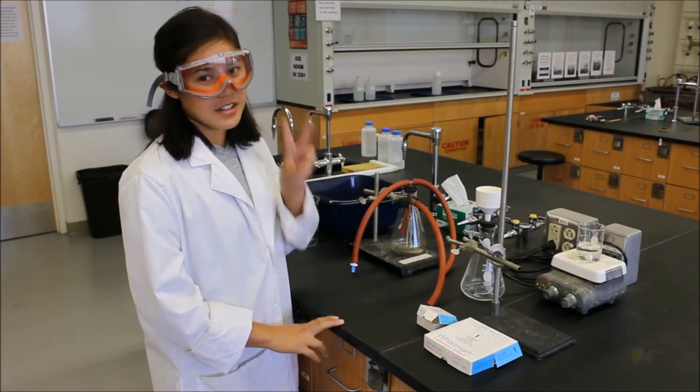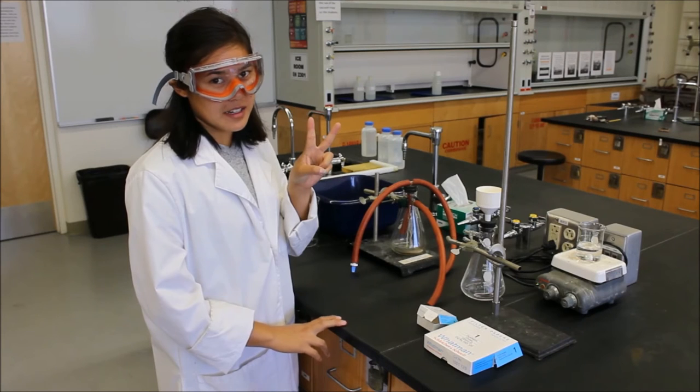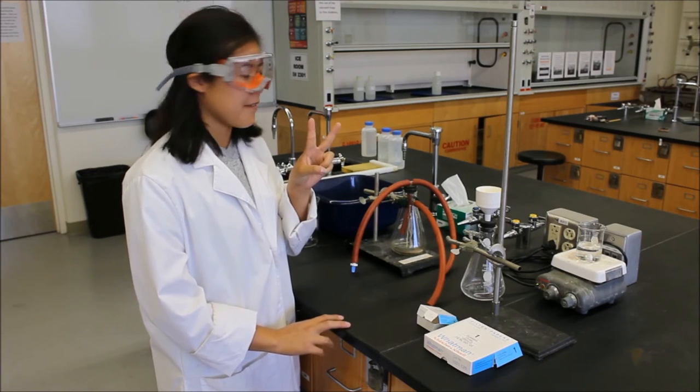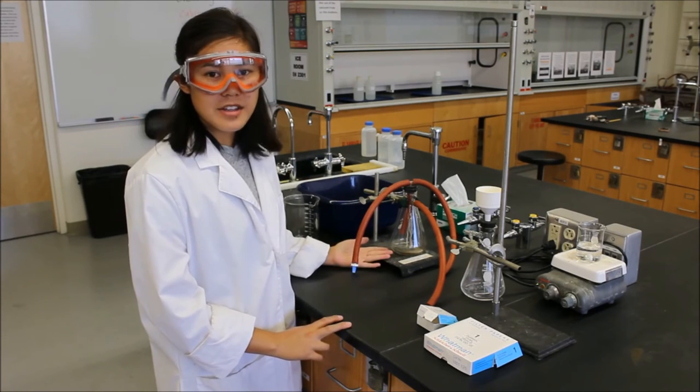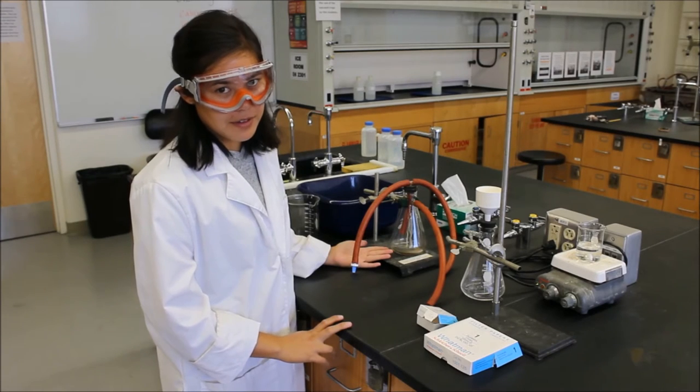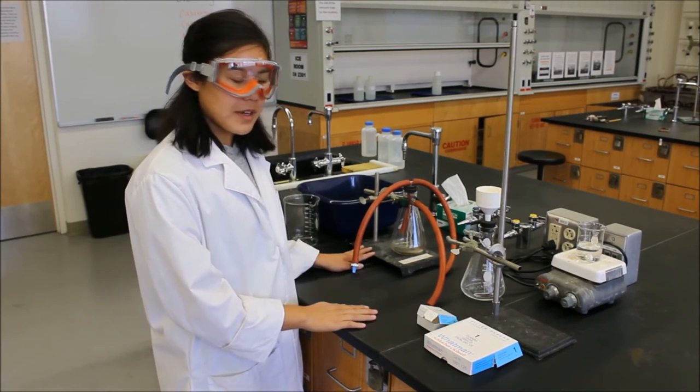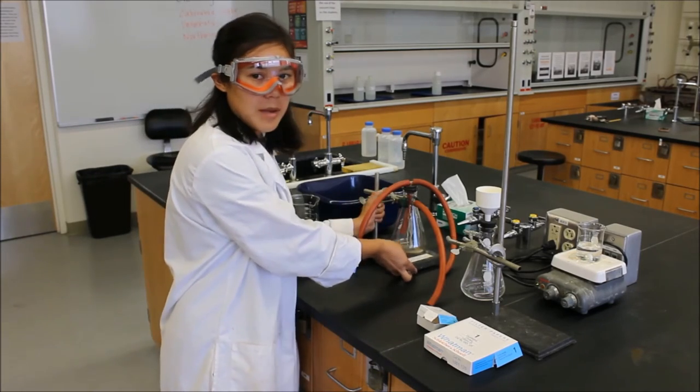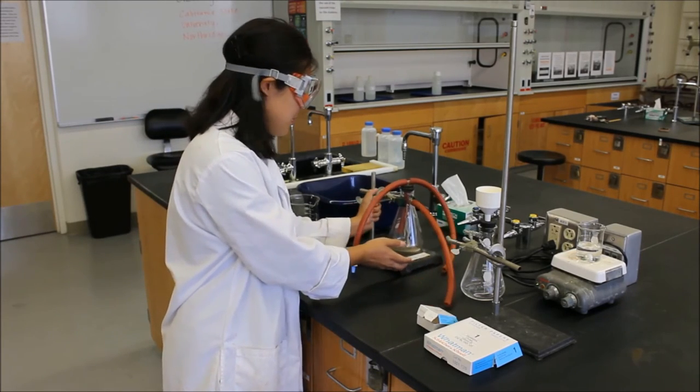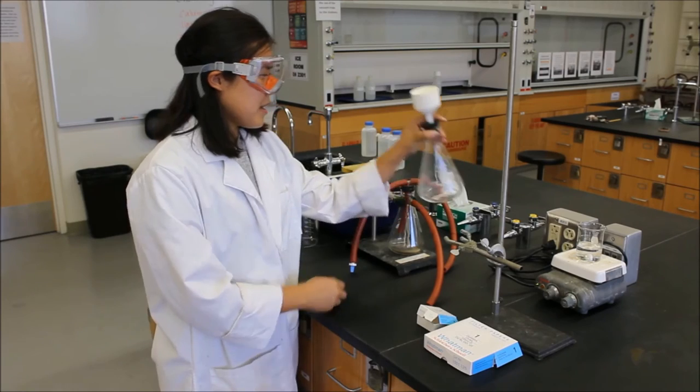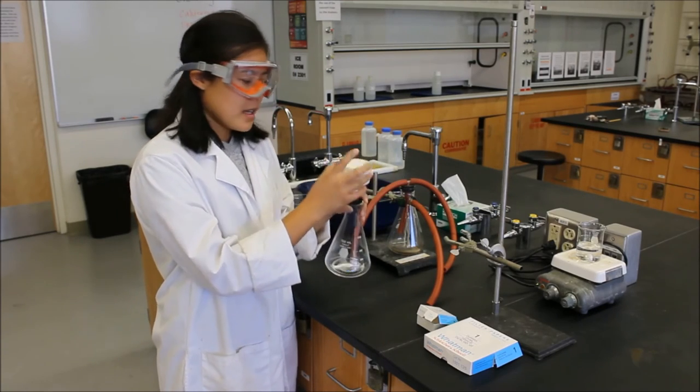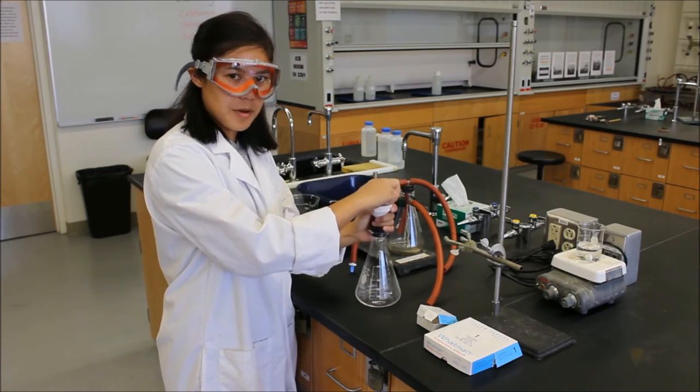So because this is a two-day experiment, we're going to need to be able to set up a filter vacuum trap so that we can filter out our crystals after we've let them sit and let them grow. So what we do is we need a vacuum trap here and we need a Buchner funnel. Now inside the Buchner funnel, this top part is removable.